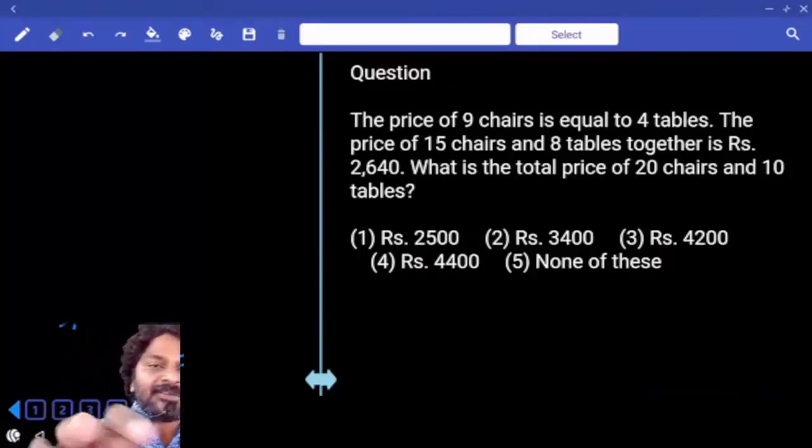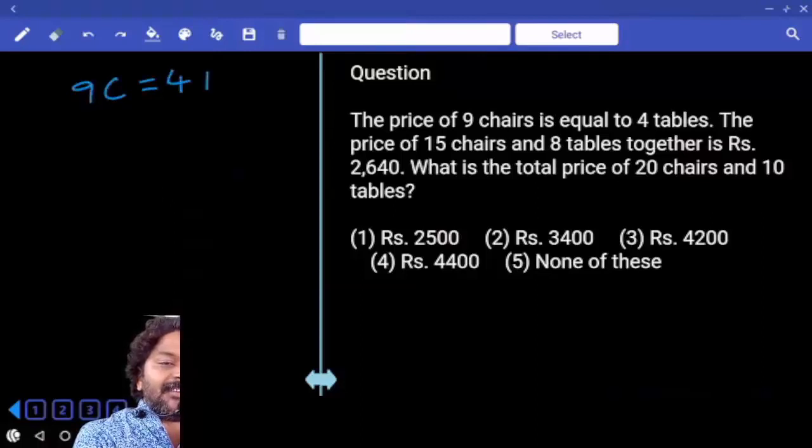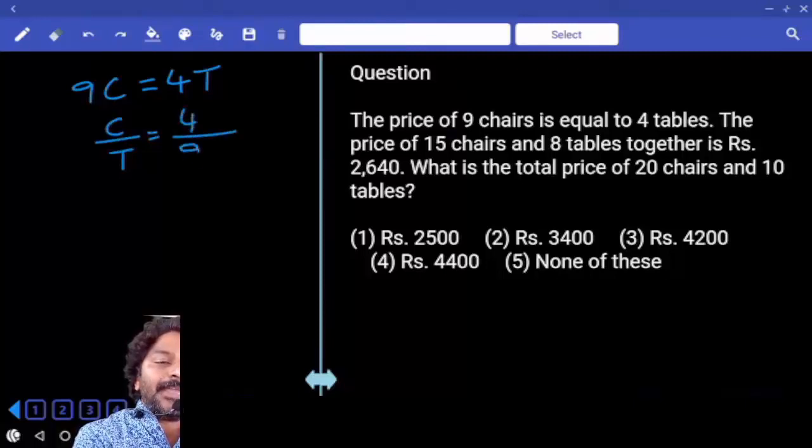The price of 9 chairs is equal to 4 tables. From this can I say chair by table is equal to 4 by 9? So chair is 4 parts, table is 9 parts.